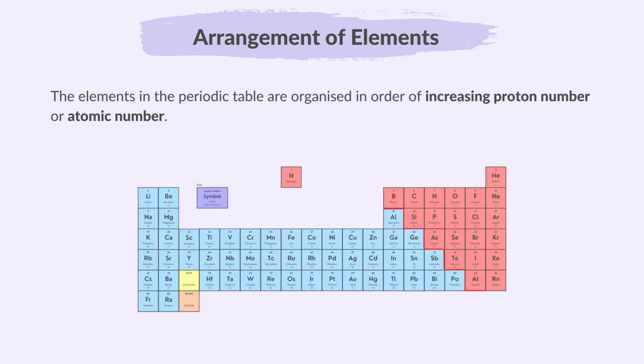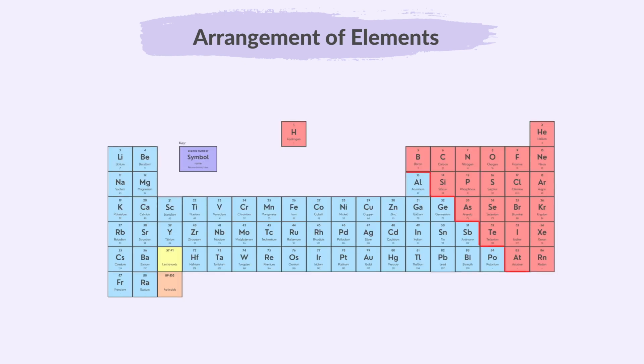So, the elements in the periodic table are organized in order of increasing proton number, which is also known as the atomic number. The atomic number increases from left to right across each period, and from top to bottom down each group.